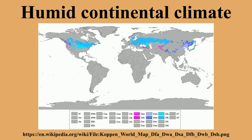Most summer rainfall occurs during thunderstorms, and in North America and Asia occasionally from tropical systems. Though humidity levels are often high in locations with humid continental climates, the humid designation means that the climate is not dry enough to be classified as semi-arid or arid.